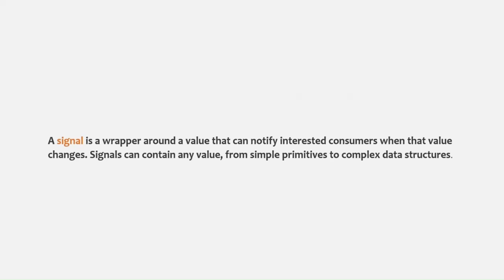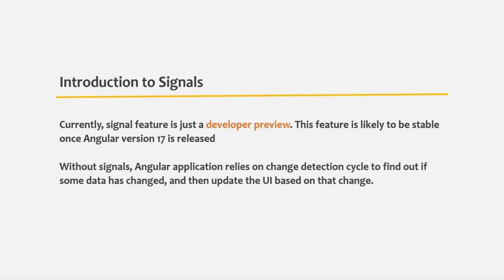Before that, let's try to understand why Angular introduced the signals feature. Without signals, an Angular application relies on a change detection cycle to find out if some data has changed and then it updates the UI based on that change. Let's try to understand this with an example.